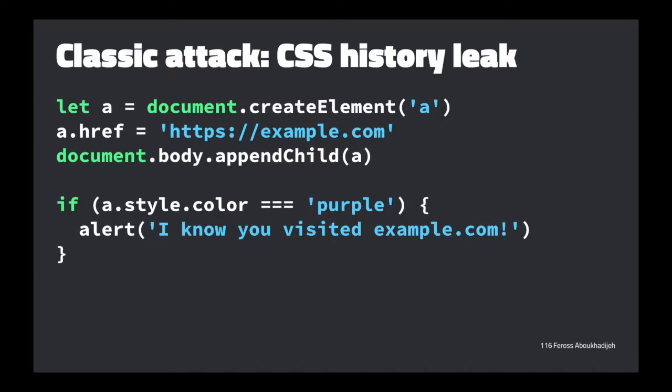The problem is it seems important to be able to check style attributes of elements in the page — that's a fundamental part of how the DOM works. So what can we do to fix this? One idea proposed: only render the link as purple if you clicked it from that site. That way site A already knows you went to site B, so rendering purple doesn't leak new information.